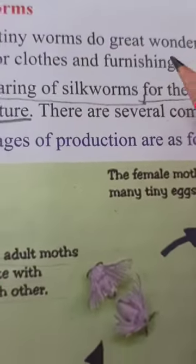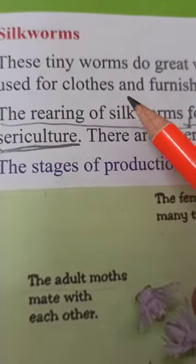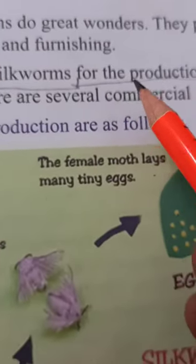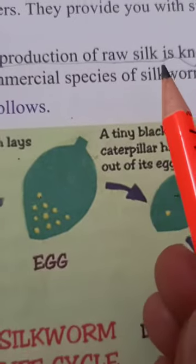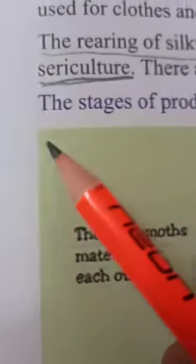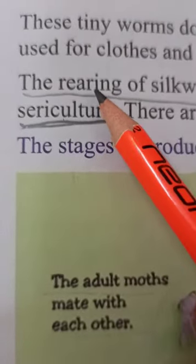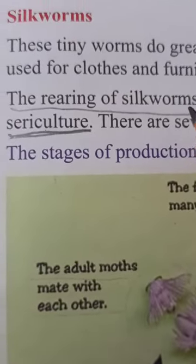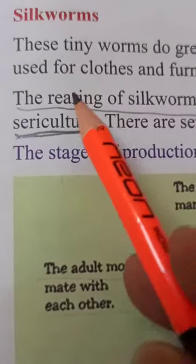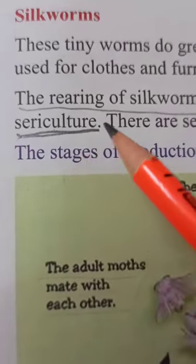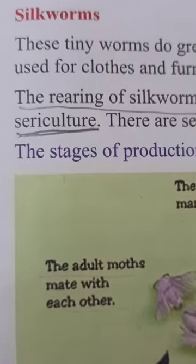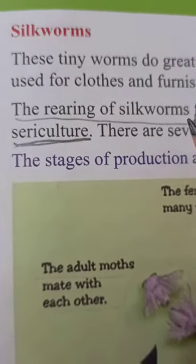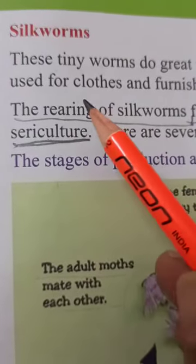How silkworms make silk fiber we will study here. The rearing of silkworms for the production of raw silk is known as sericulture. Rearing means to culture or to keep these silkworms in farms — taking care of them, providing proper food, and providing suitable conditions so that they can grow properly and complete their life cycle.